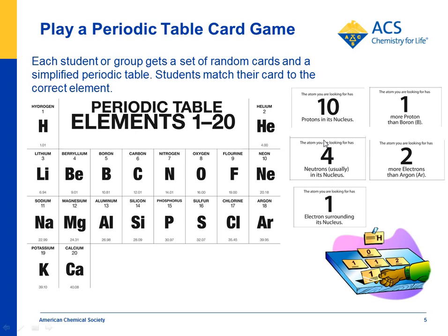Now these are a little harder — they deal with neutrons. The atom you're looking for has four neutrons, usually, in its nucleus. We'll explain what 'usually' means. To find where this card goes, you look for an element whose atomic number, when you add four to it, gets you very close to the atomic mass. In this case, if I add four to three, I get seven, and that's very close to lithium's atomic mass. So the vast majority of lithium atoms have four neutrons, which gets us close to seven, but some must have three because the atomic mass is a little less than seven.